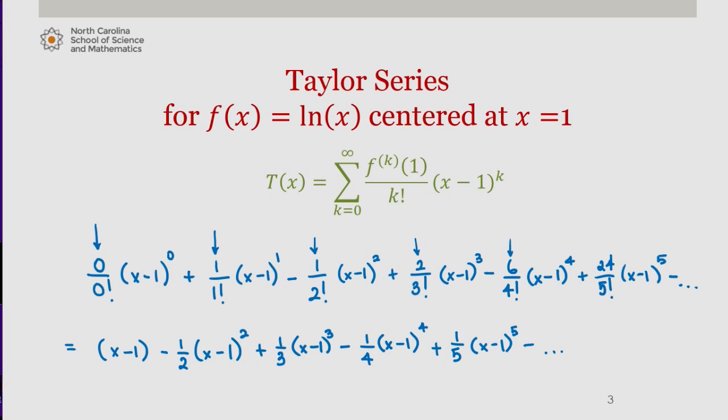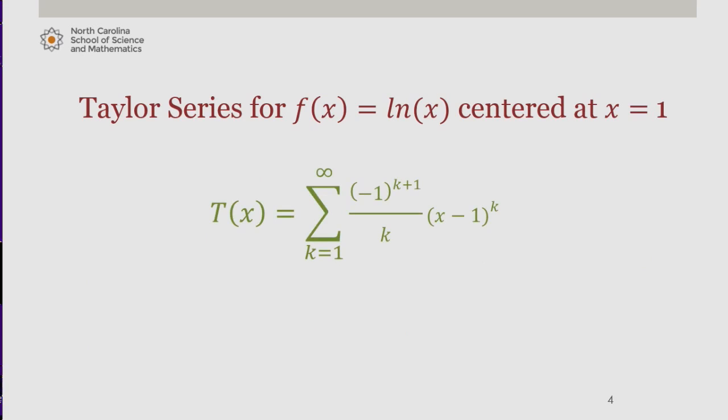And ultimately, we can write this in summation notation as the sum from k equals 1 to infinity of negative 1 to the k plus 1 over k times x minus 1 to the k. Verify this on your own paper.